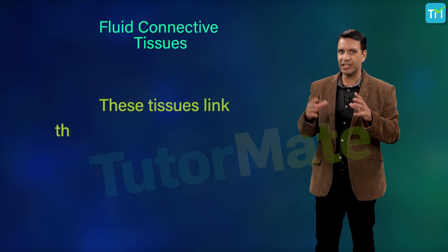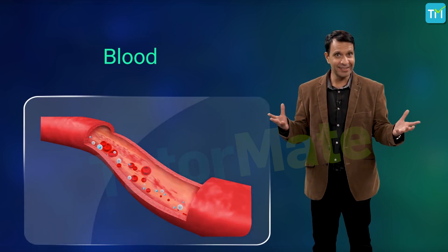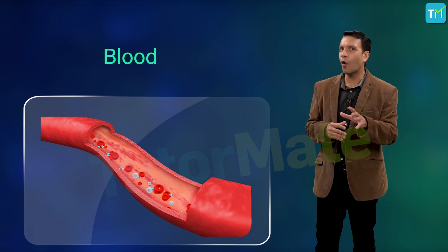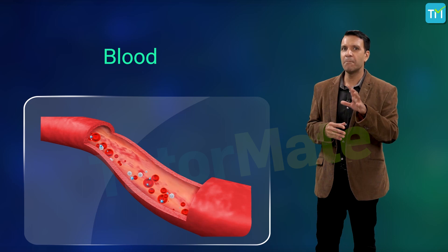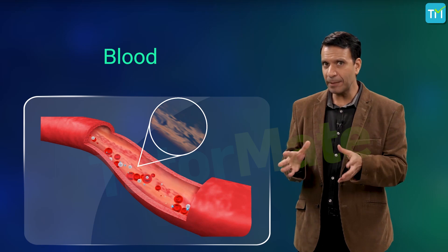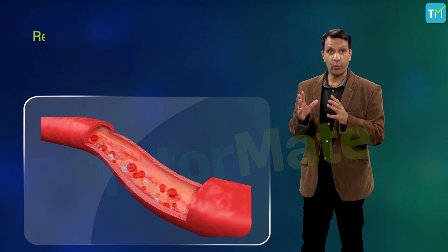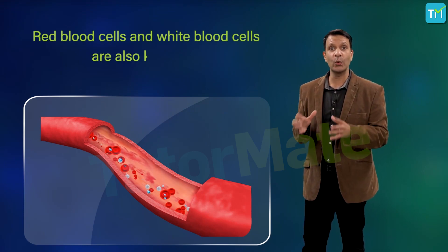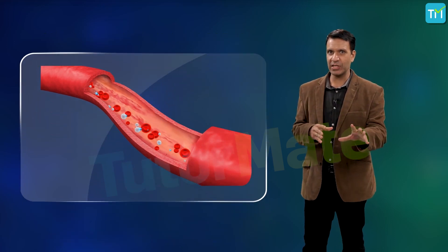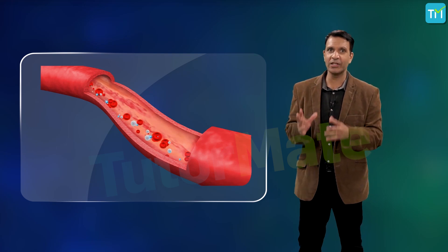These tissues link the different parts of the body and maintain continuity in body. Blood is an example of fluid connective tissue. Blood has a fluid or liquid matrix called plasma in which red blood cells (RBCs), white blood cells (WBCs), and platelets are suspended. Red blood cells and white blood cells are also known as erythrocytes and leukocytes.